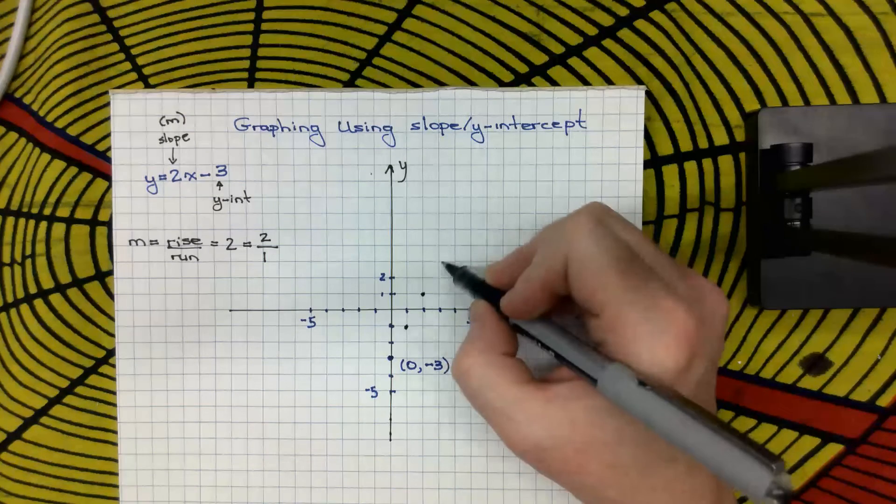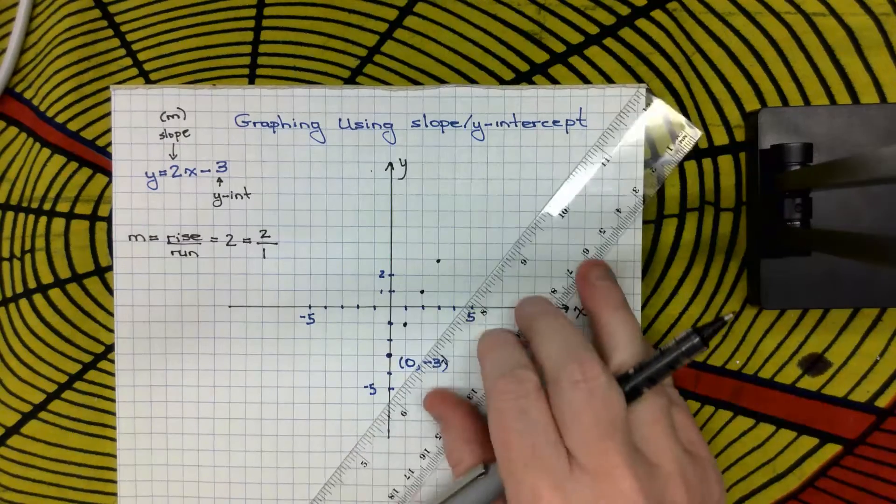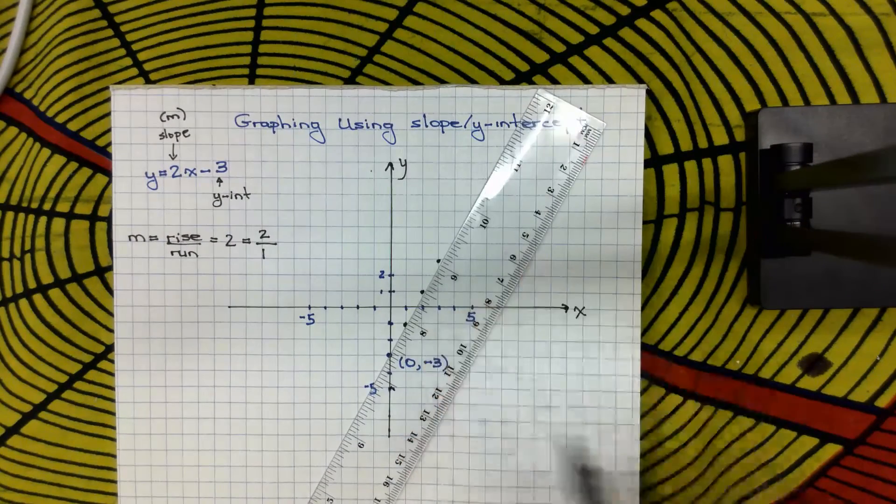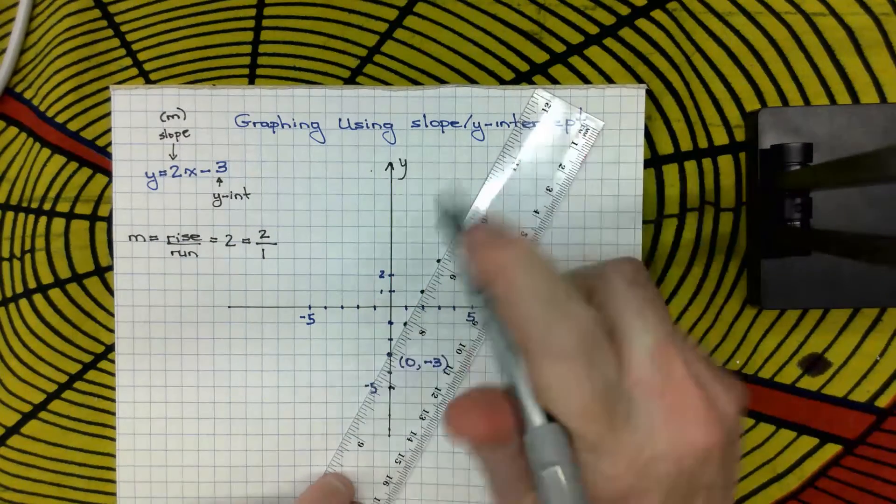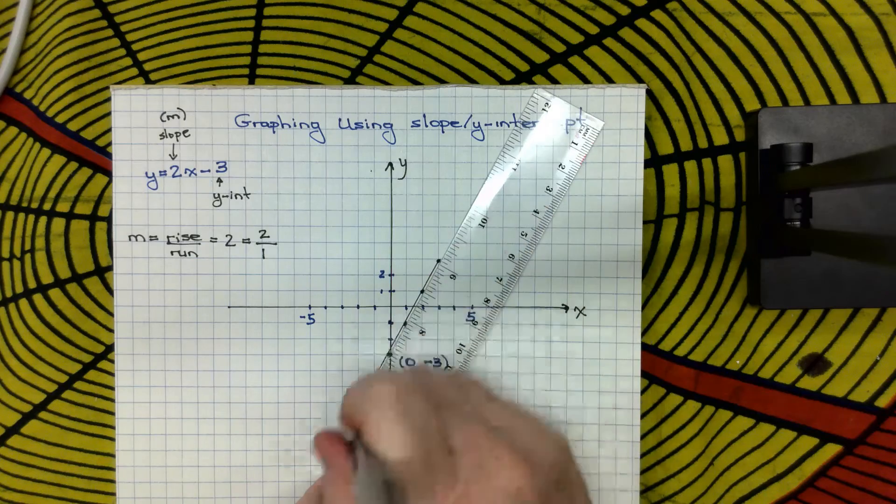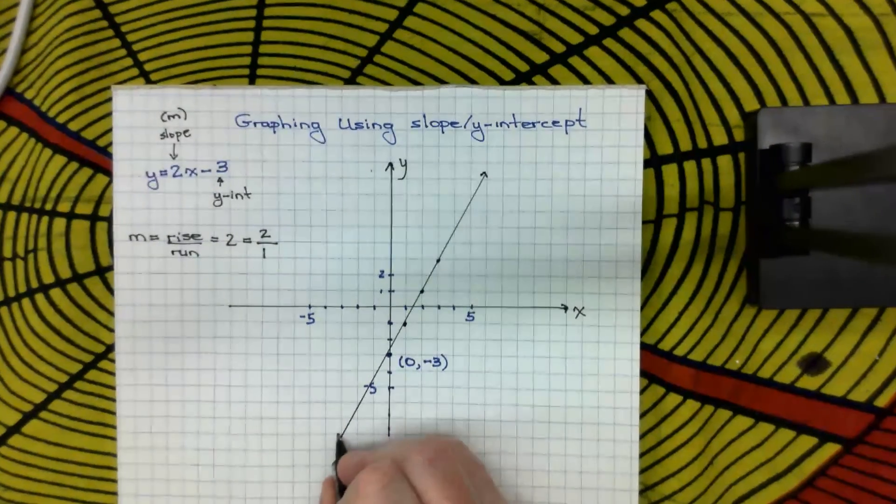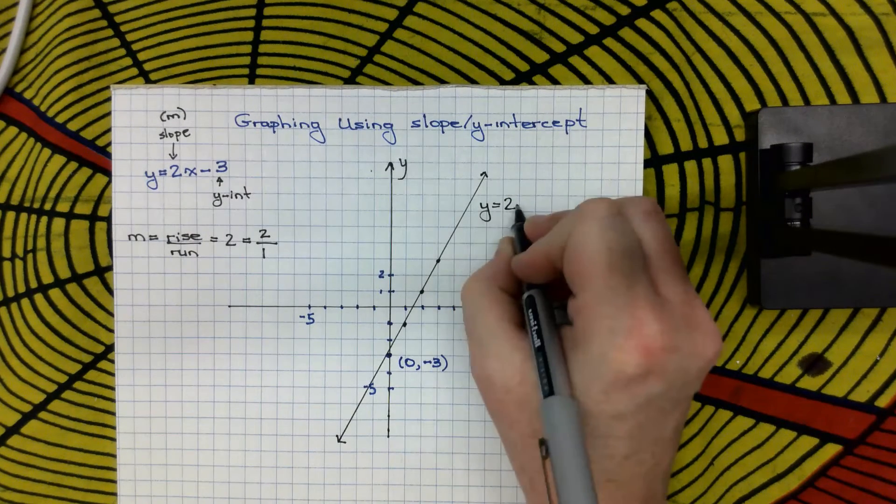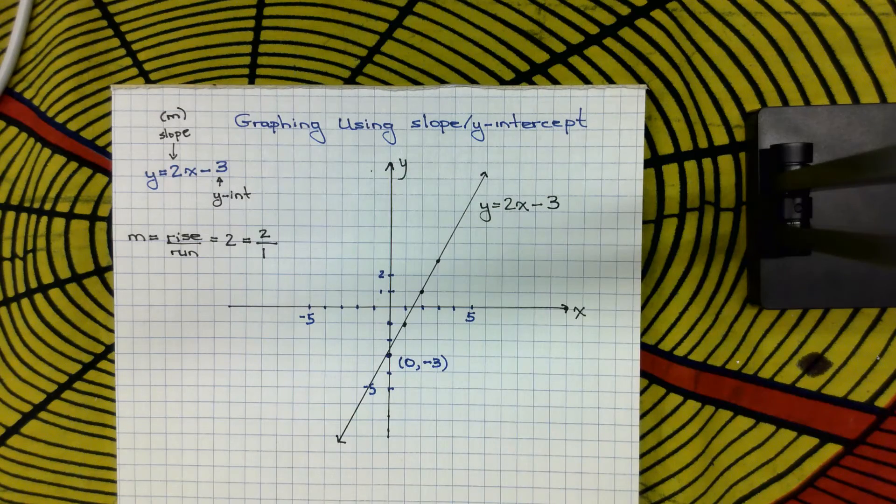And now I can take my ruler, and you'll see that my points go through the whole line. So my ruler goes through all of the points. So now I can connect the dots and extend my line. And I have drawn a line using the slope of 2 and the y-intercept of negative 3.